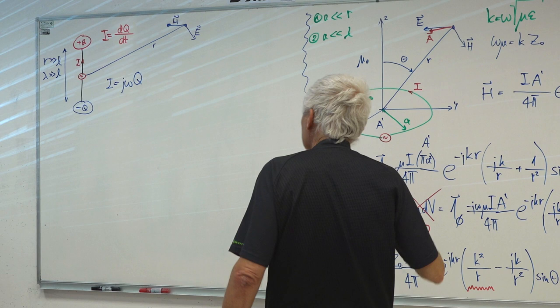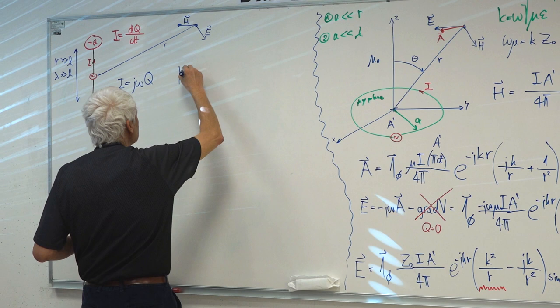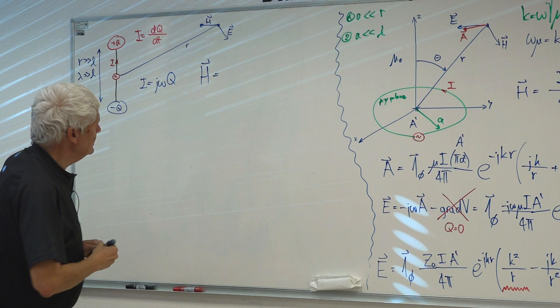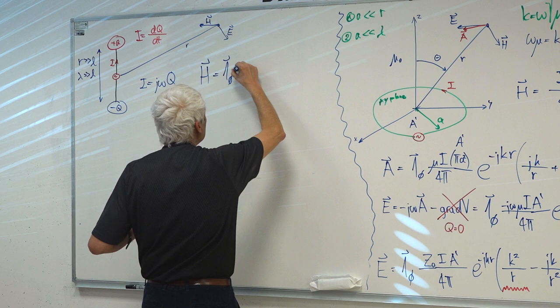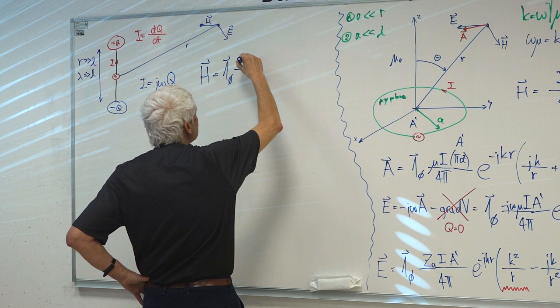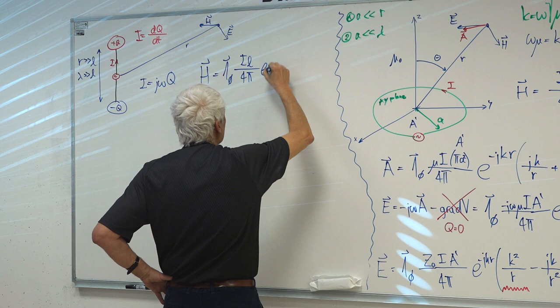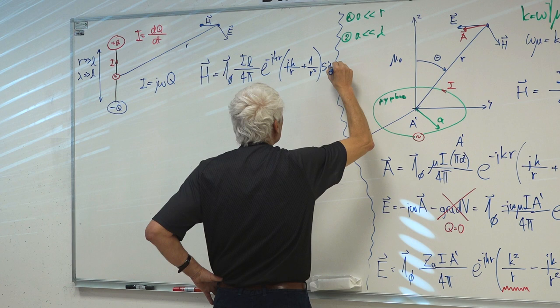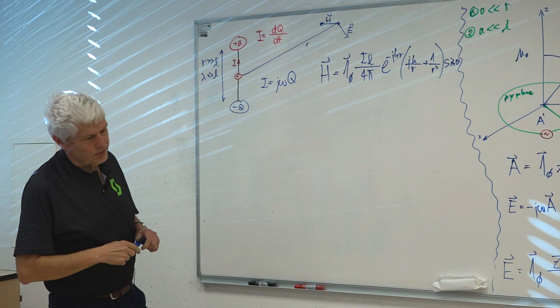Writing the equations we had last time: we had the magnetic field in direction one-hat_φ, with I×L/(4π) × e^{−jkr} × [jk/r + 1/r²] × sin(θ) — the exact field from the curl of A. For the electric field, it's easier to write things in terms of charge q rather than current I, because this configuration is an electric dipole.